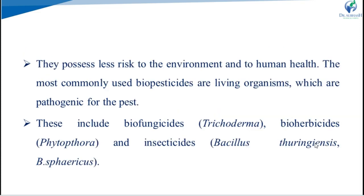The most commonly used biopesticides are living organisms which are pathogenic for the pest. These include biofungicides, e.g. Trichoderma, bioherbicides i.e. Phytophthora, and bioinsecticides i.e. Bacillus thuringiensis and Bacillus sphaericus.